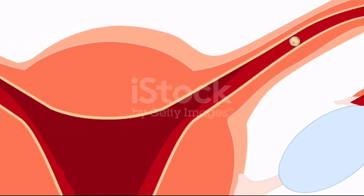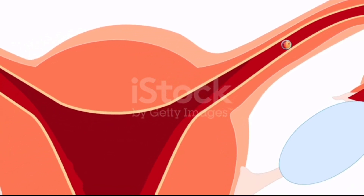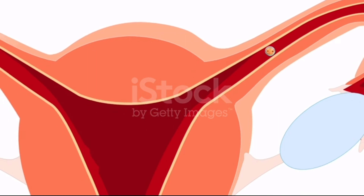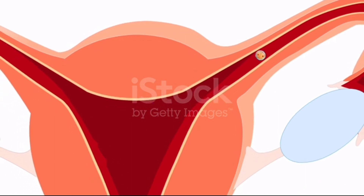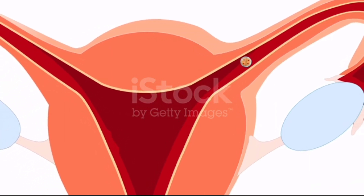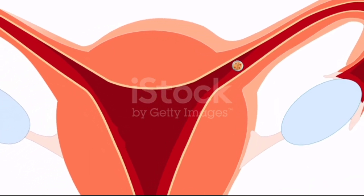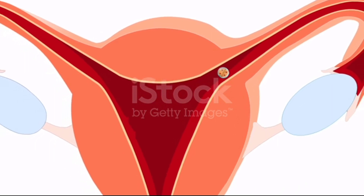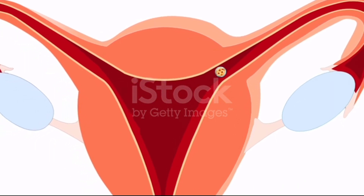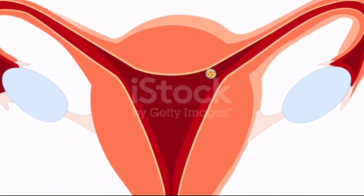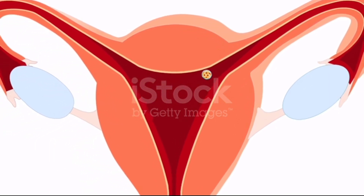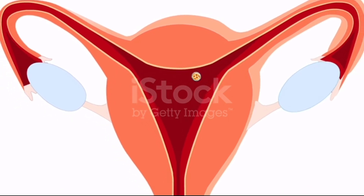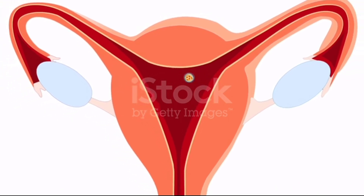After fertilization, the egg divides into two cells, then four cells, then eight cells, and then into 16 cells. The 16-cell egg then comes down and implants in the uterus.